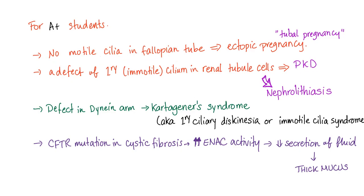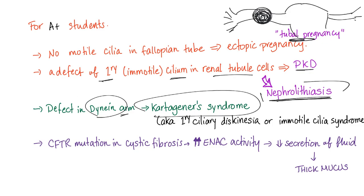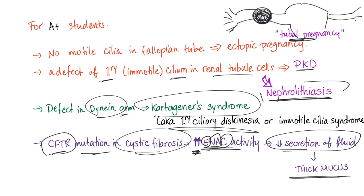If you have no motile cilia in the fallopian tube, it can lead to ectopic pregnancy. Instead of having a baby in the uterus, you will have a zygote in the fallopian tube — which is not fun. Having a baby there is called ectopic pregnancy or tubal pregnancy, and it could be fatal. A defect in primary cilia in renal tubules can lead to polycystic kidney disease or kidney stones, also known as nephrolithiasis. A defect in the dynein arm can lead to Kartagener syndrome, also known as primary ciliary dyskinesia. A CFTR mutation in cystic fibrosis causes a problem with the epithelial sodium channel, leading to increased activity of this channel and decreased secretion of fluid, resulting in very thick mucus — which is why kids with cystic fibrosis have a really bad time.